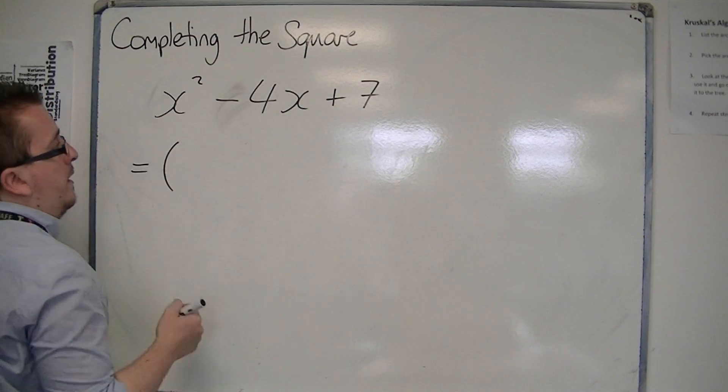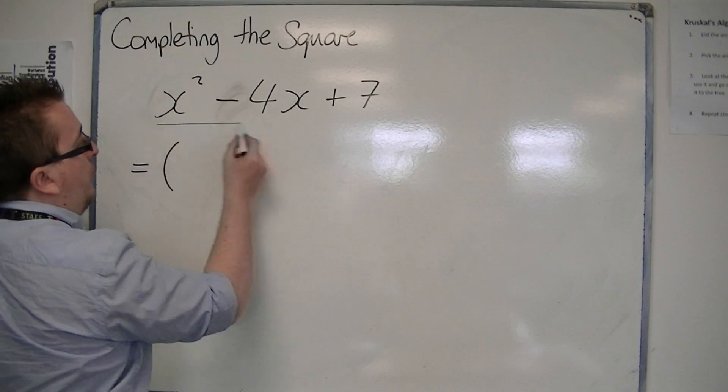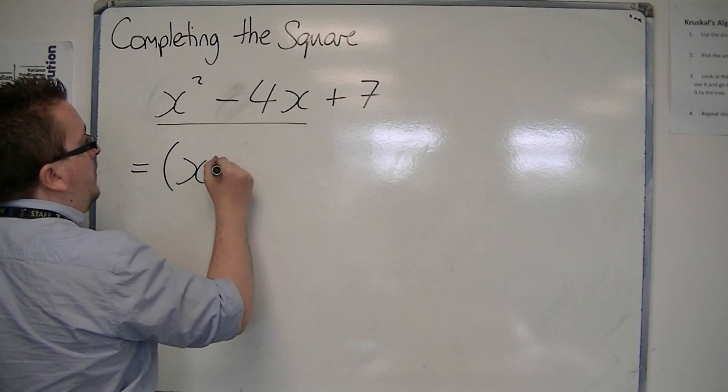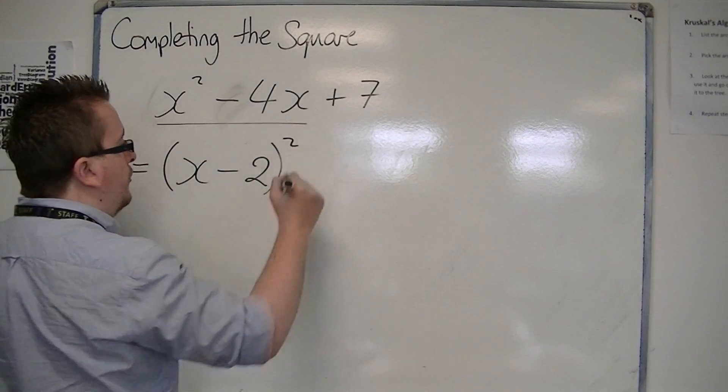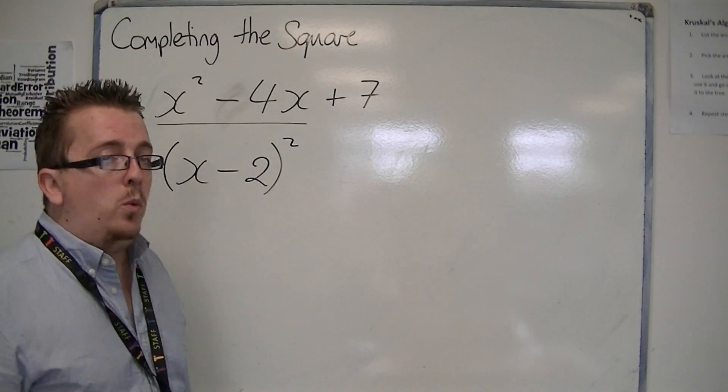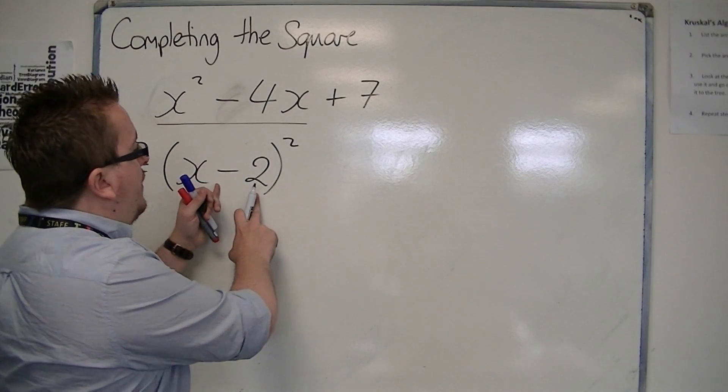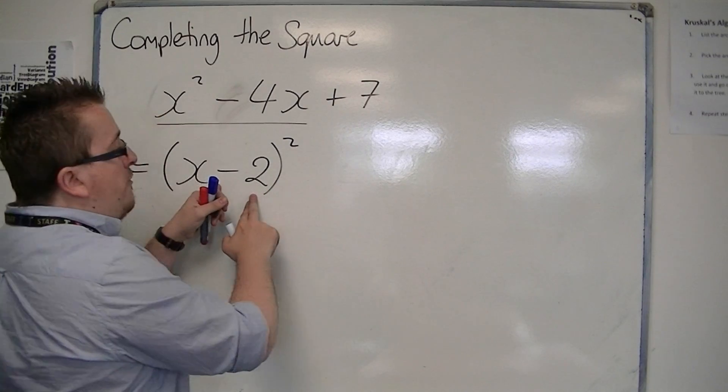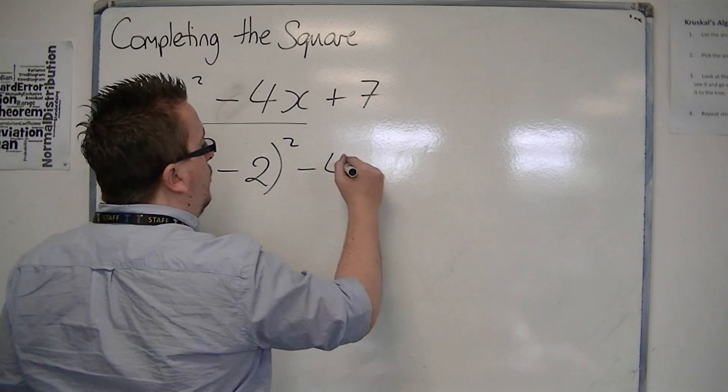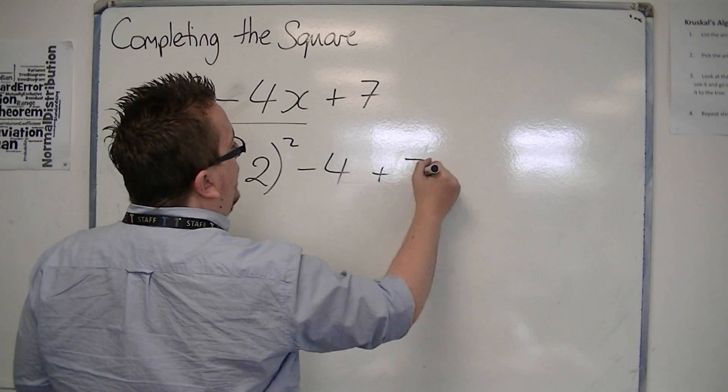You have the number -4, so you get (x - 2)². You take away the square of this number -2. So the square of -2 is 4, so you take away 4, and you've still got that +7 on the end.